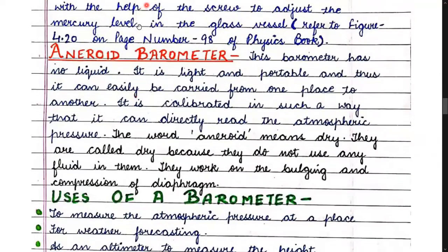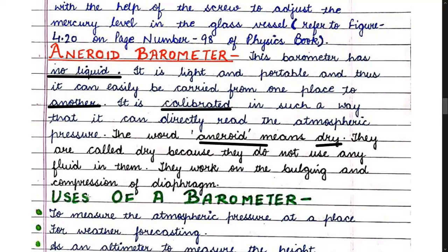Now coming to the aneroid barometer. This barometer does not have any liquid inside it and does not use mercury as a barometric liquid. It is light, portable, and can be easily carried from one place to another. It is calibrated and scaled so that it can directly read atmospheric pressure. The word 'aneroid' means dry, because it does not contain any liquid. It works on the bulging and compression of a diaphragm.